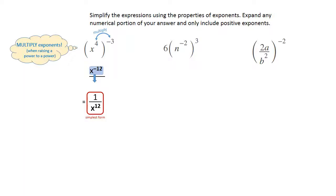In the second example, we've got a 6 outside the parentheses. We're going to leave that alone because it's not touching an exponent. The n negative 2, that's going to be multiplied by the 3 on the outside, and it's going to become n to the negative 6.